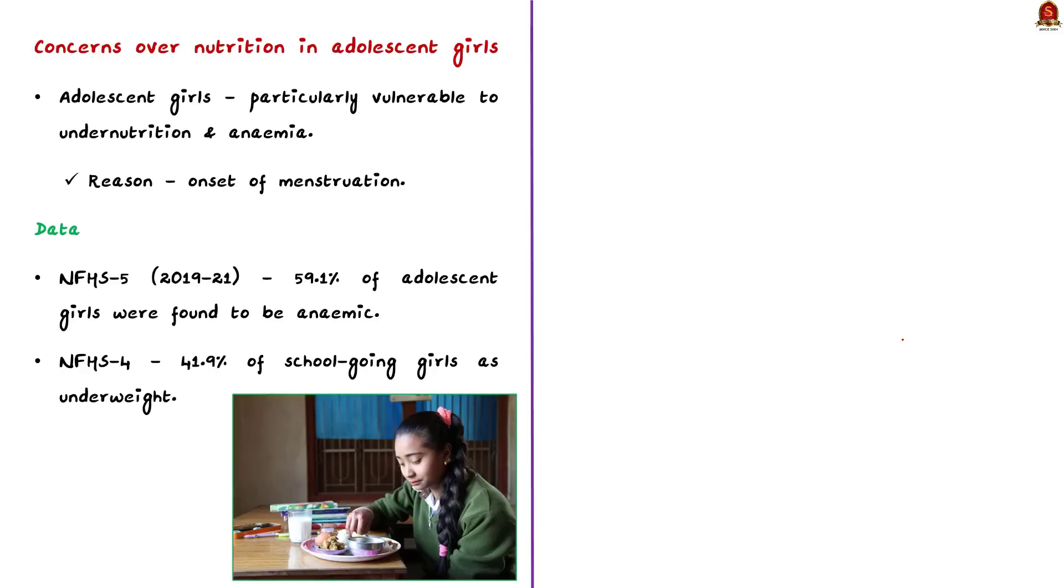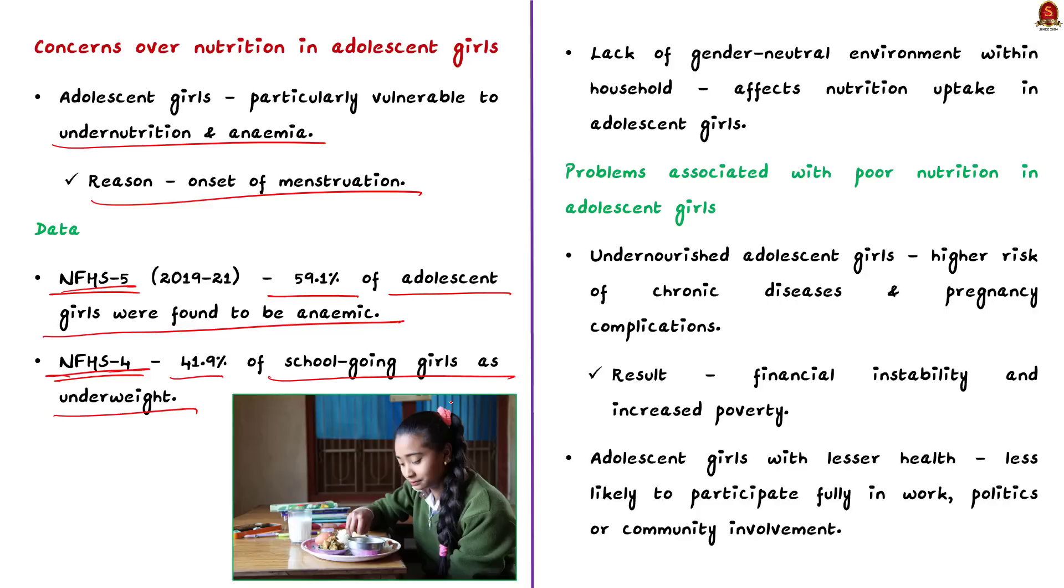First, let us understand the concern over nutrition in adolescent girls. See, adolescent girls are particularly vulnerable to undernutrition and anemia. During adolescent stage, there is an onset of menstruation in many of the girls. Due to this fact, adolescent girls are particularly vulnerable to undernutrition and anemia. Now, coming to the data, see the findings of the National Family Health Survey 5 confirms the concerns of undernutrition and anemia in adolescent girls. The NFHS 5 said that 59.1% of adolescent girls were found to be anemic. Apart from this, the NFHS 4 has also reported that over 41.9% of school-going girls are underweight. From these datas, we can say that the nutritional status of adolescent girls is worrying. Further, the lack of gender-neutral environment within a household also affects the nutrition uptake in adolescent girls.